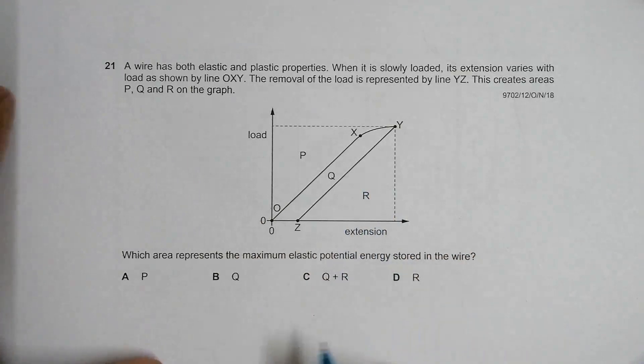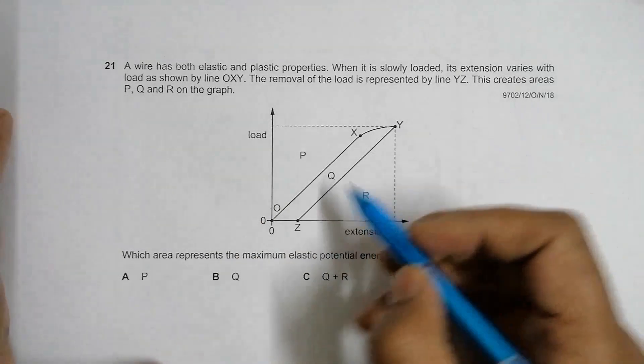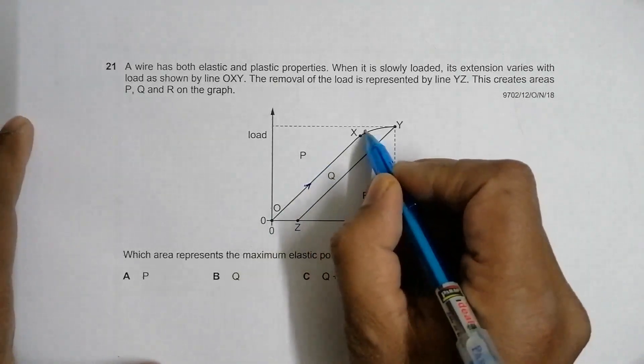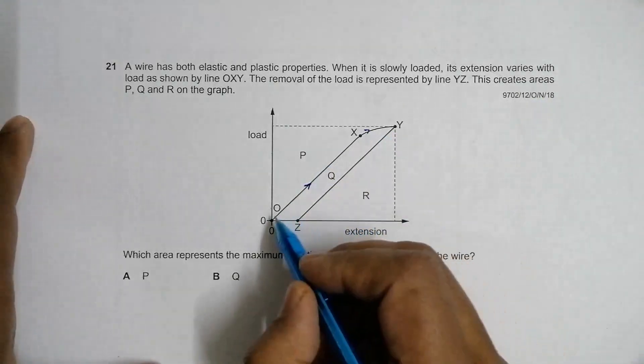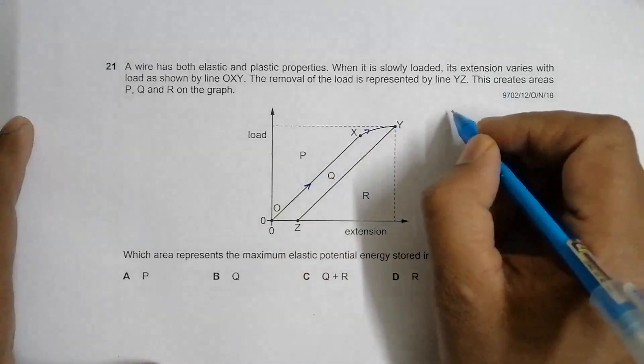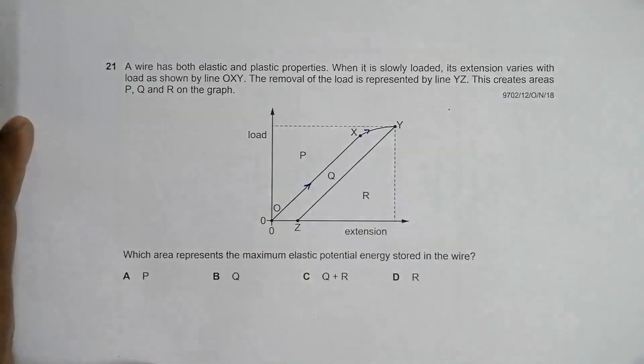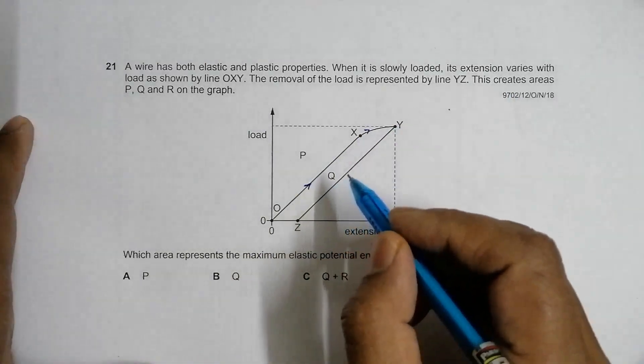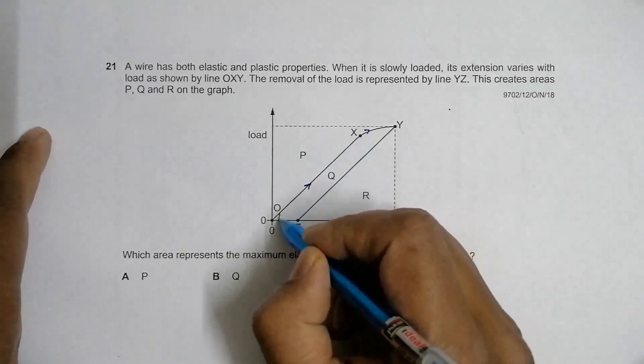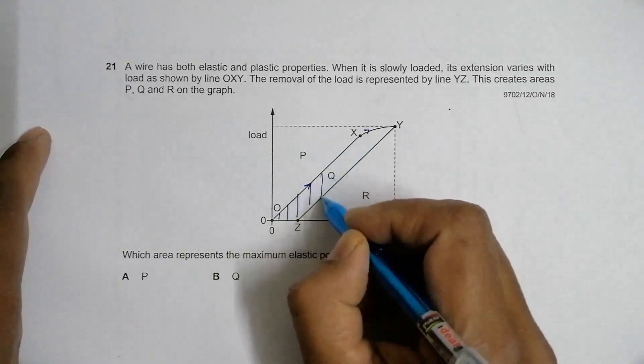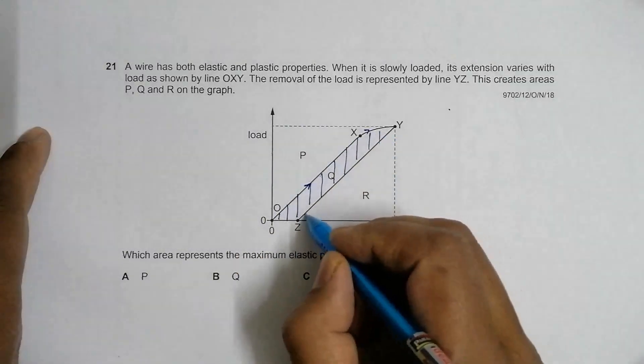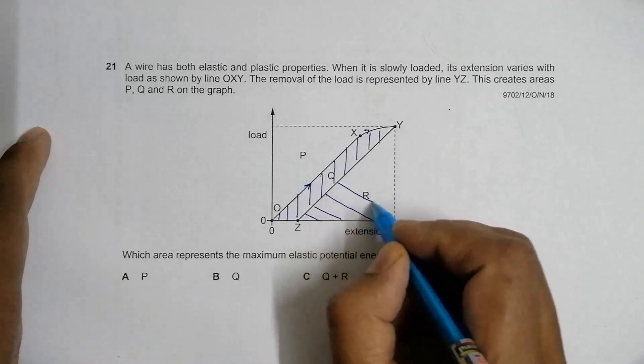We have to find the elastic potential energy stored in the wire. During extension, the graph goes from O through X to Y, then back. This area from OXY down, which is Q plus R, represents this process. Let me draw certain patterns for all the areas.